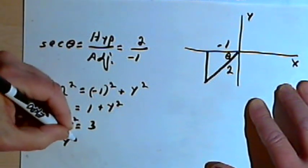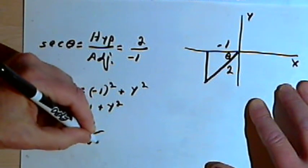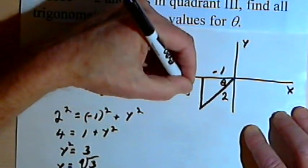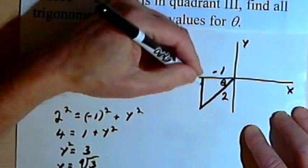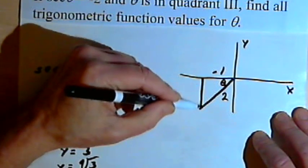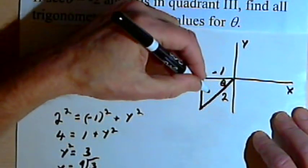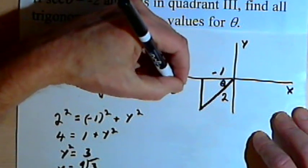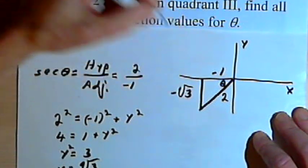And so y would equal the square root of 3. So here's the square root of 3 on the other side. Now, that other side is a negative value. I'm in the third quadrant, so that's actually going to be negative square root of 3.